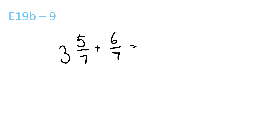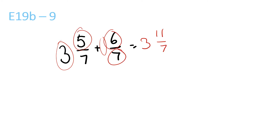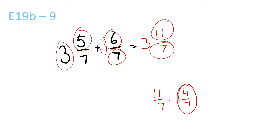Next page. 3 plus nothing is 3. 5 plus 6 is 11, and 7 stays the same. But since the top one is bigger than the bottom one, you have to reduce it. So 11 over 7 — we'll turn it into a mixed number. 7 goes into 11 once with a remainder of 4 over 7. So 1 and 4 over 7 plus 3 is equal to 4 and 4 over 7.